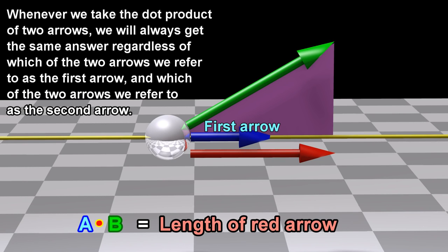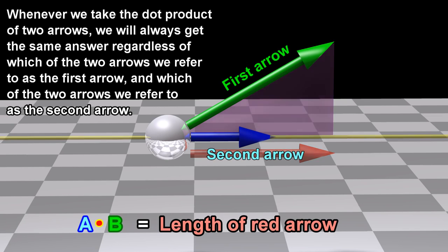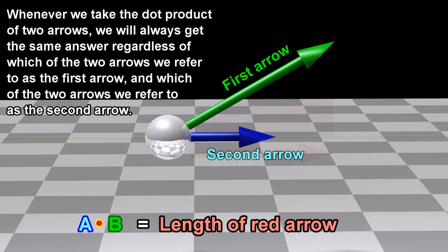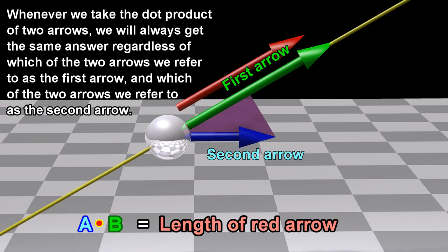Whenever we take the dot product of two arrows, we will always get the same answer regardless of which of the two arrows we refer to as the first arrow, and which of the two arrows we refer to as the second arrow.